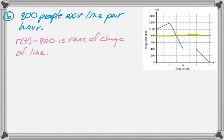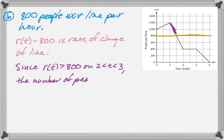So on the interval from 2 to 3, which is this interval right here, R of T is greater than 800, so that means that the total rate is positive. And if the total rate is positive, then the line is getting longer, so it's increasing.